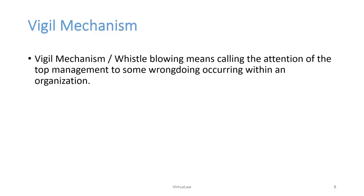The vigil mechanism means calling the attention of top management to some wrongdoing occurring within an organization. This is also referred to as whistleblowing. The concept originated from the British practice of blowing a whistle whenever a crime was found, and it has entered the corporate world relatively recently. Assume you are working in an organization and you come across some kind of fraud which the company is undergoing.